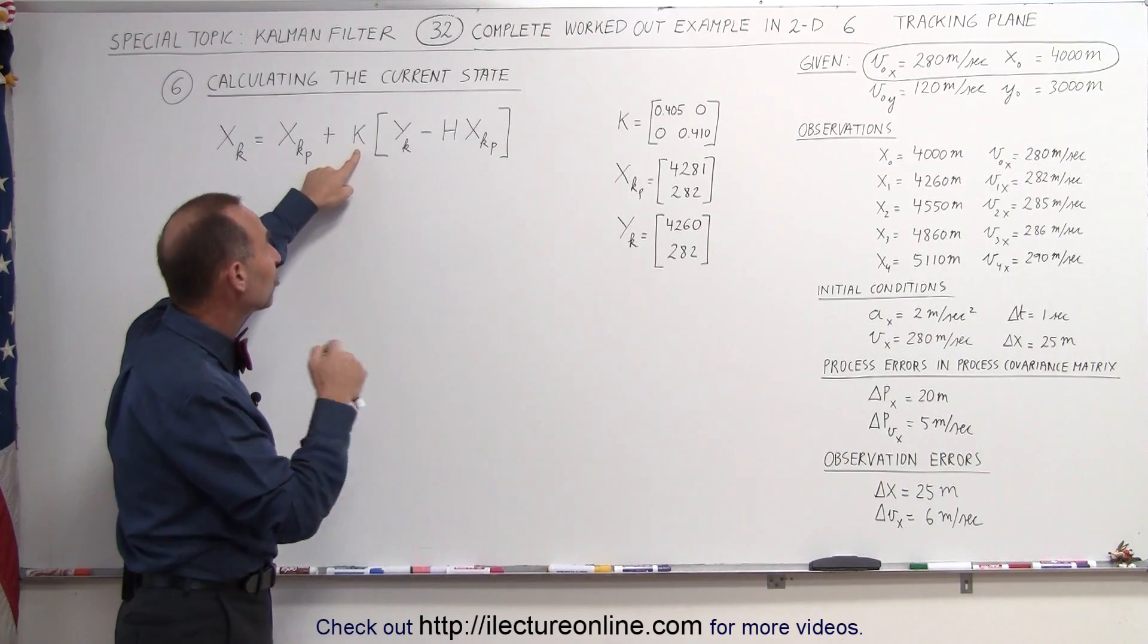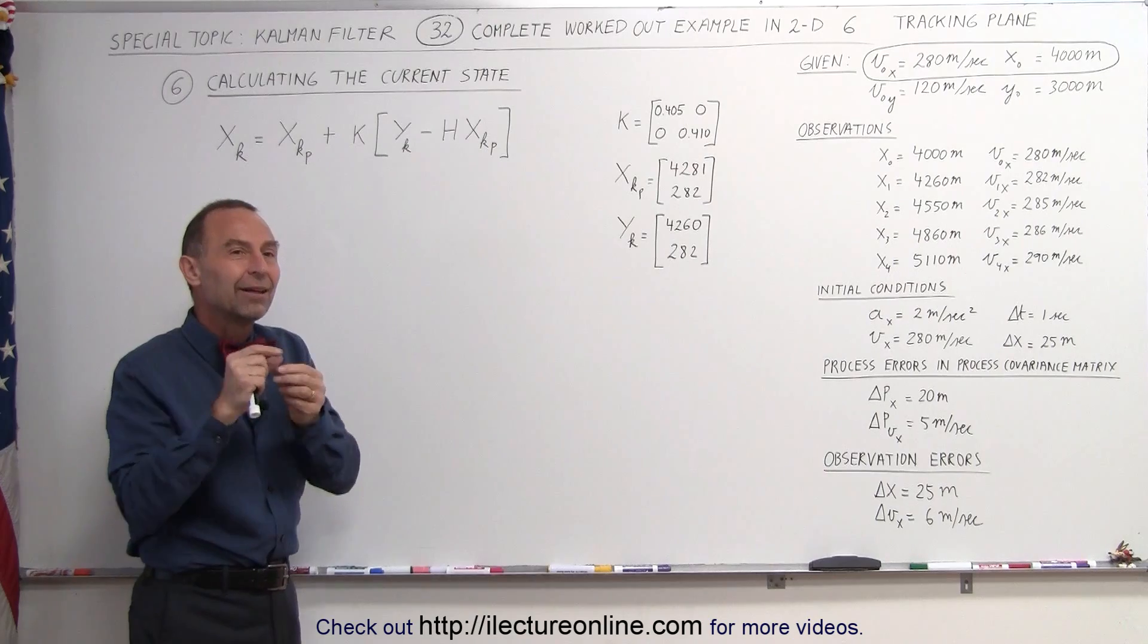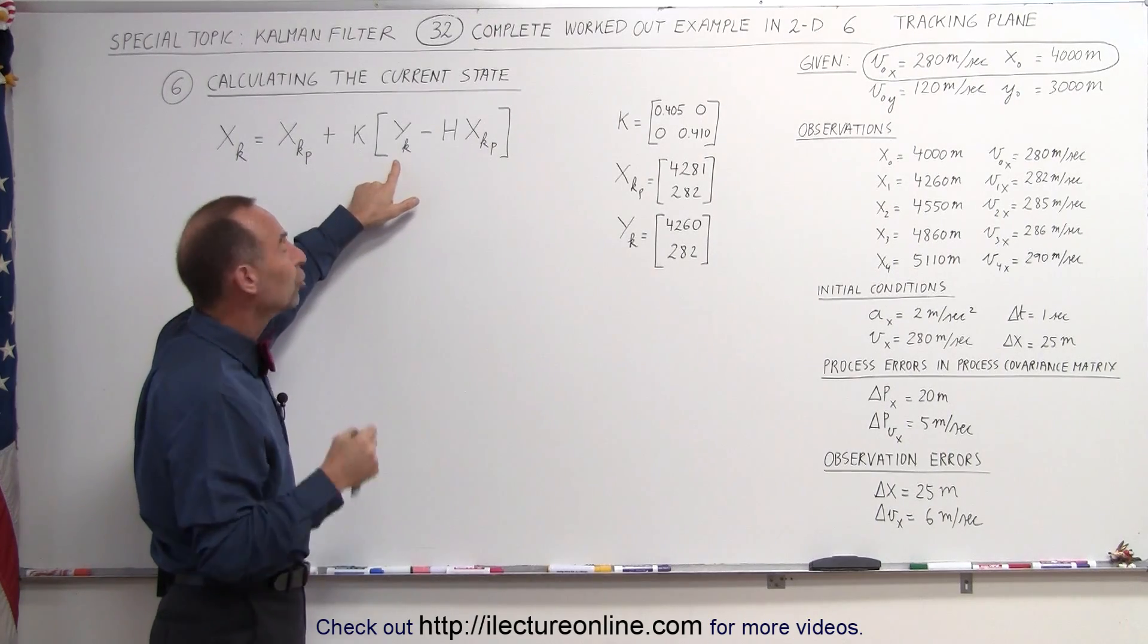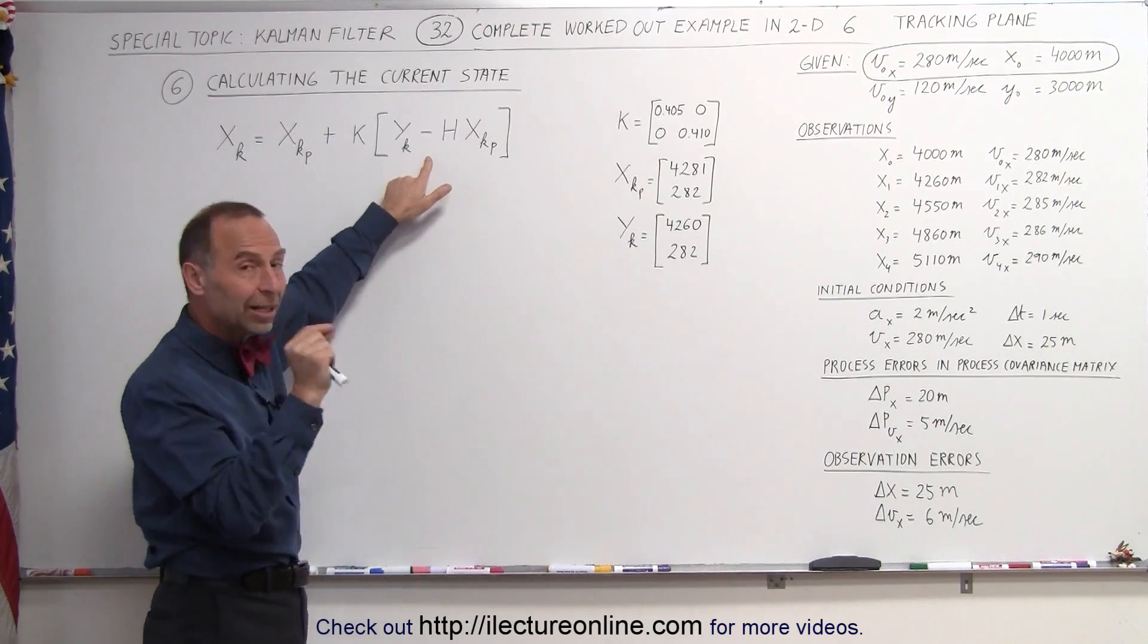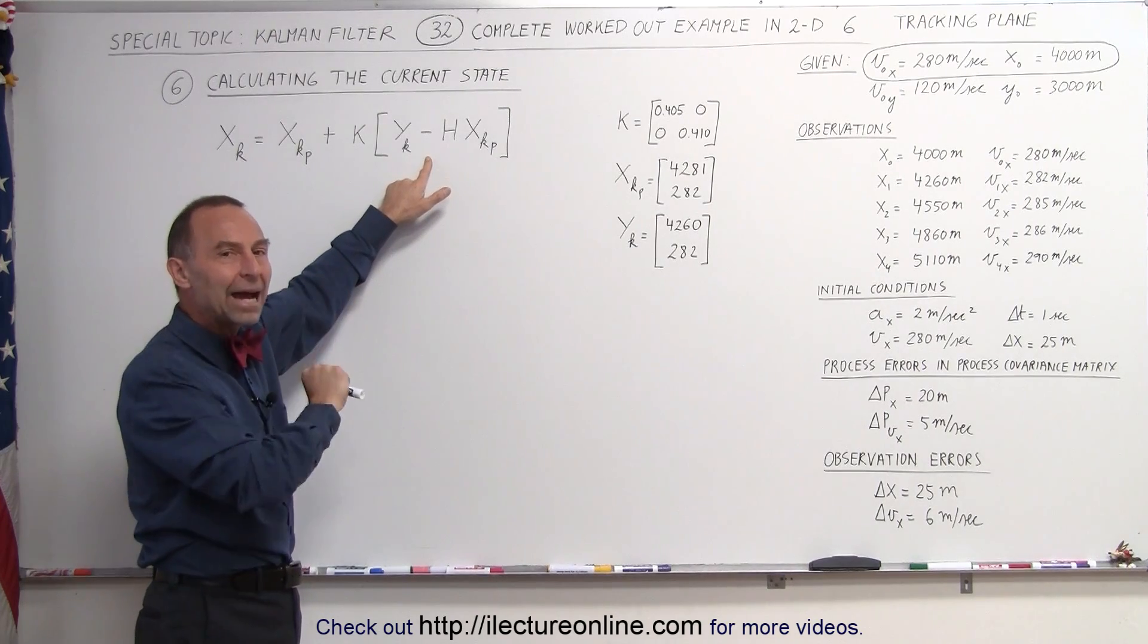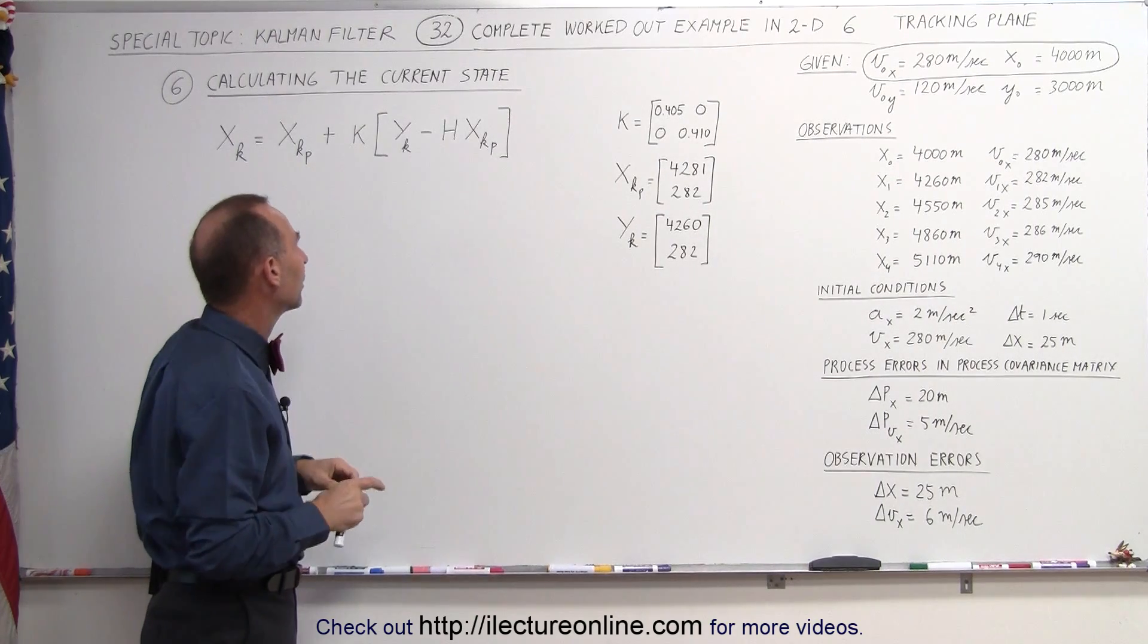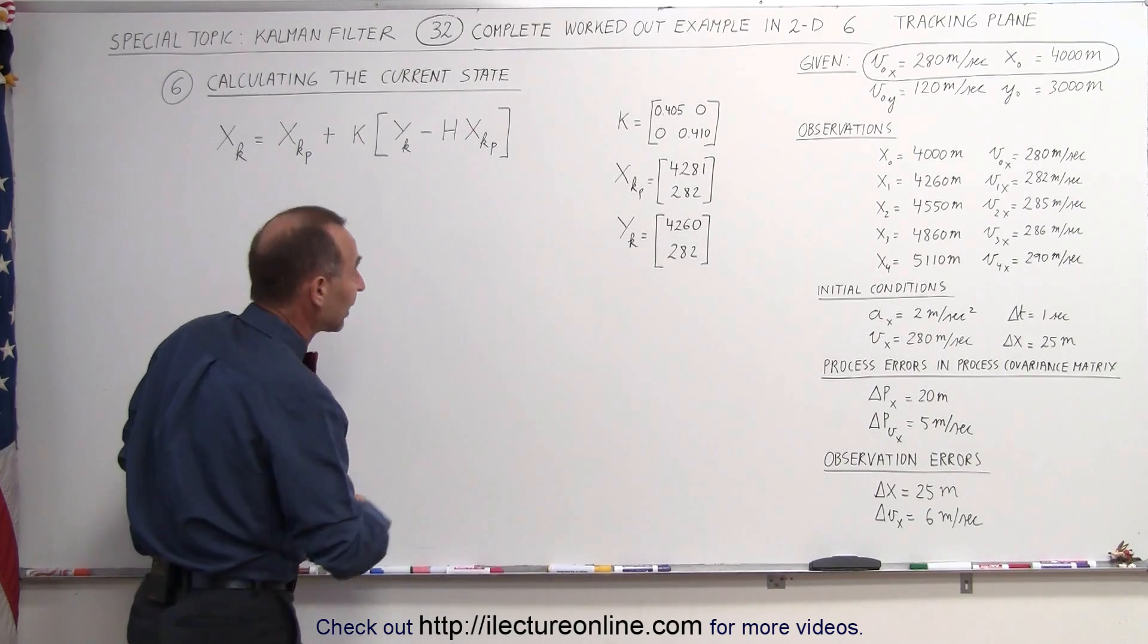If the Kalman gain is very small, then we put very little value in the new measured values and we only want to adjust the predicted value by just a little bit to try to get a more accurate position and velocity of our airplane.